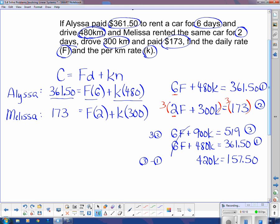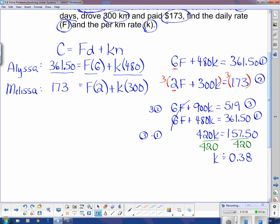Now to figure out what K is, we have to divide both sides by 420. And K equals 157.50 divided by 420, which is 0.38 approximately. I've rounded that. So the per kilometer rate is 38 cents.